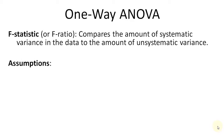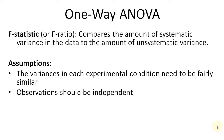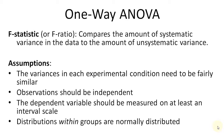As with all parametric tests based on the normal distribution, for the F statistic to be reliable we need to fulfill certain criteria: the variances in each experimental condition need to be fairly similar; the data should be independent, ensured by collecting random samples; the dependent variable should be measured on at least an interval scale, usually a continuous variable; and the distributions should be normally distributed within each group.